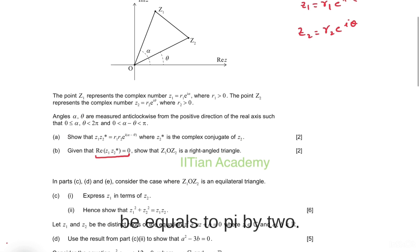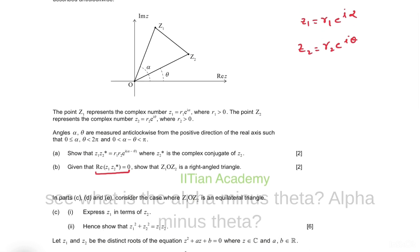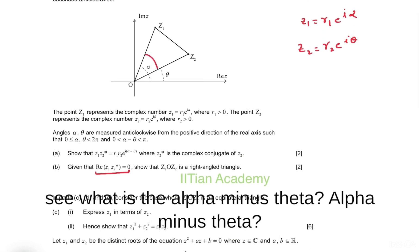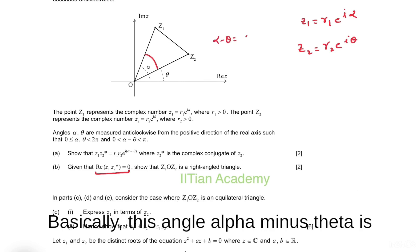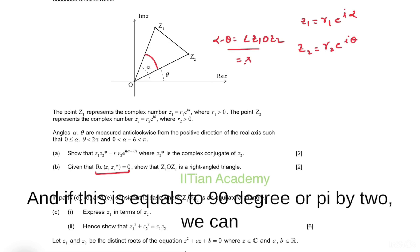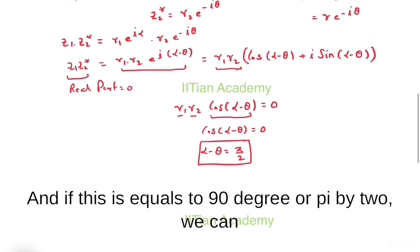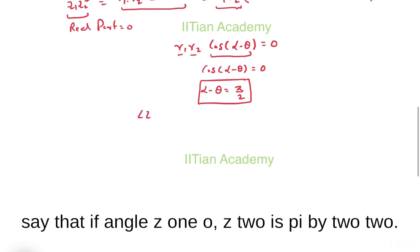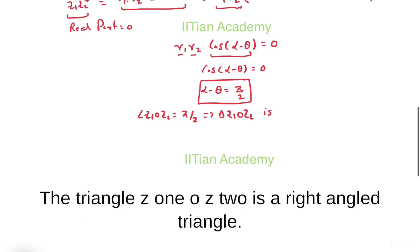Therefore α − θ = π/2. Looking at the diagram, α − θ is the angle z1Oz2. If this angle equals π/2 (90°), then triangle z1Oz2 is a right-angled triangle.